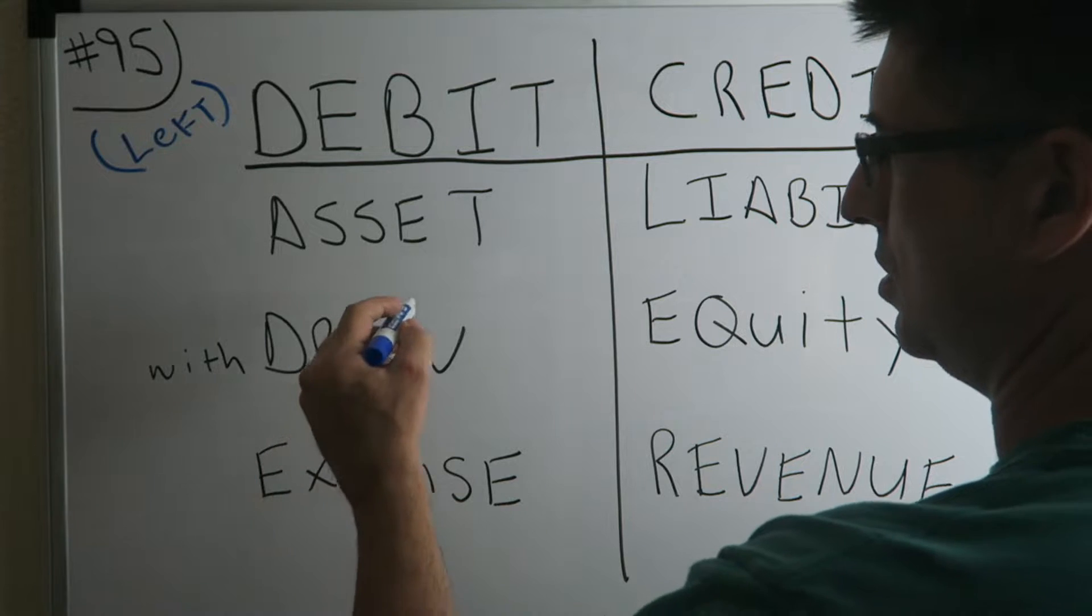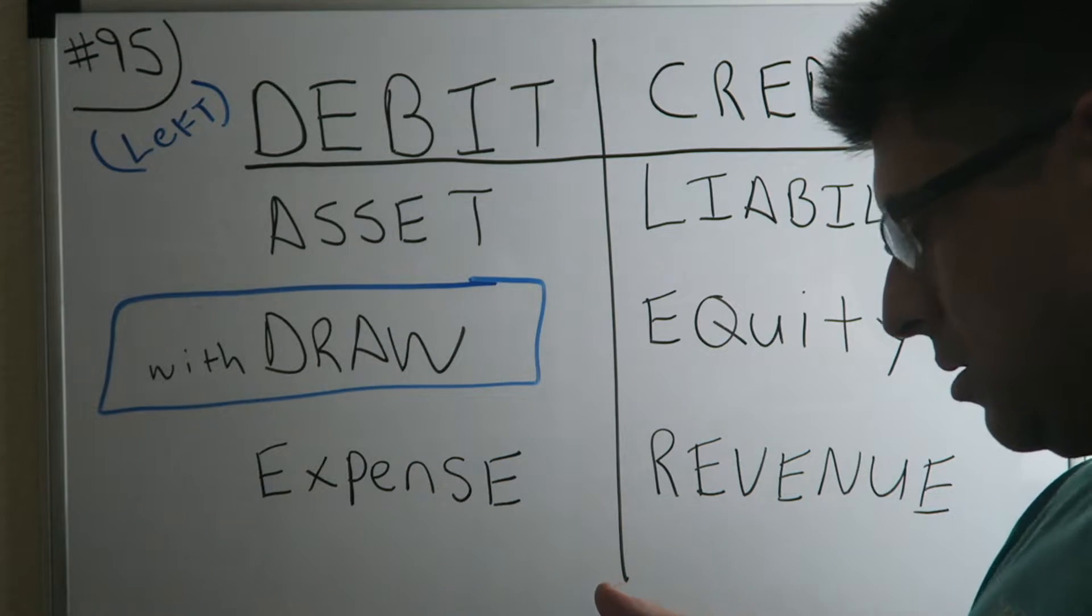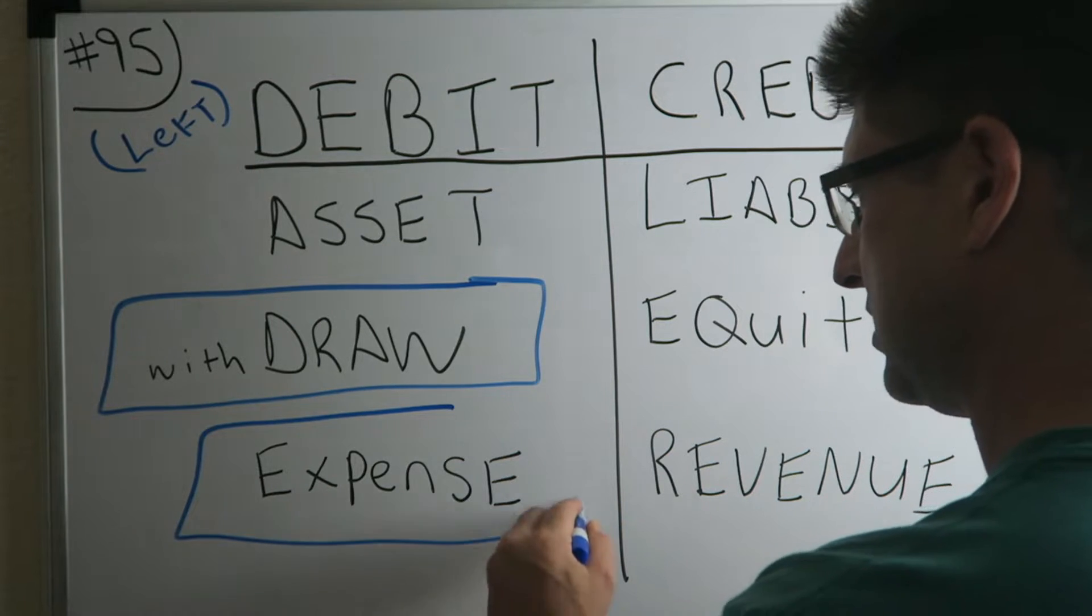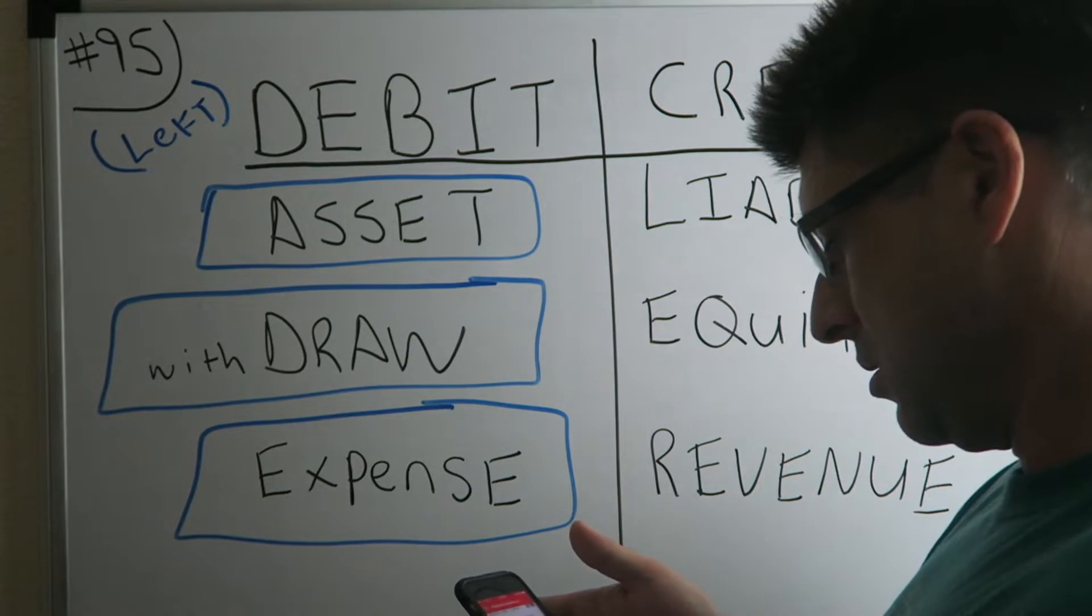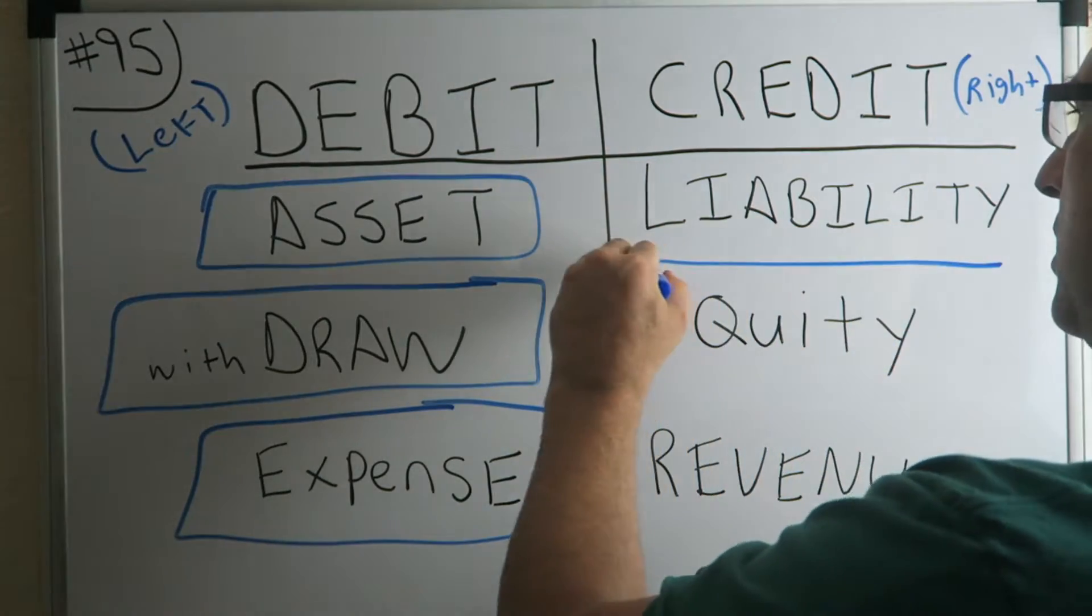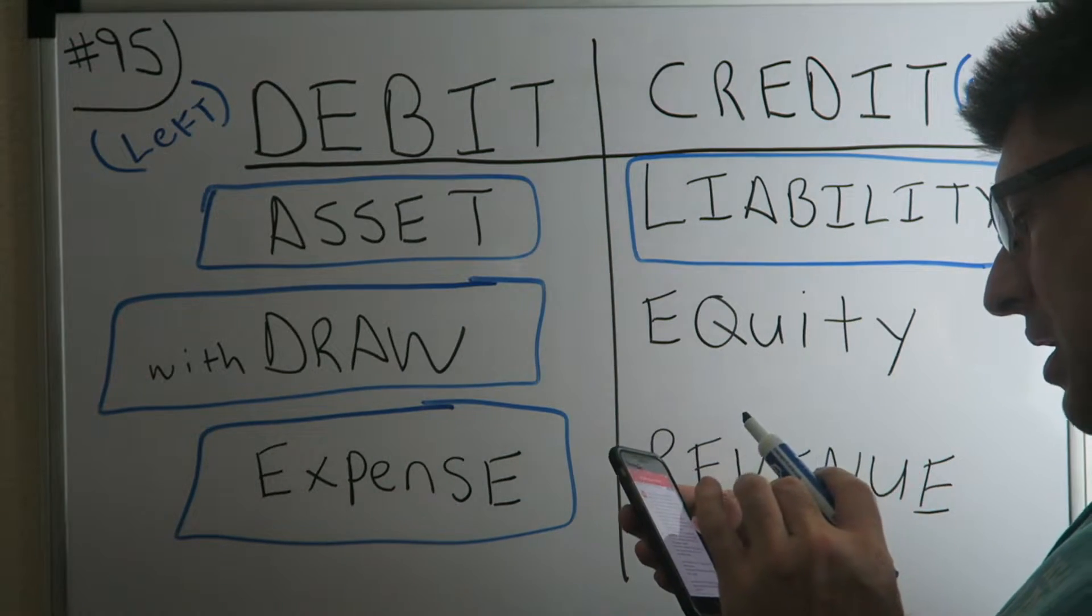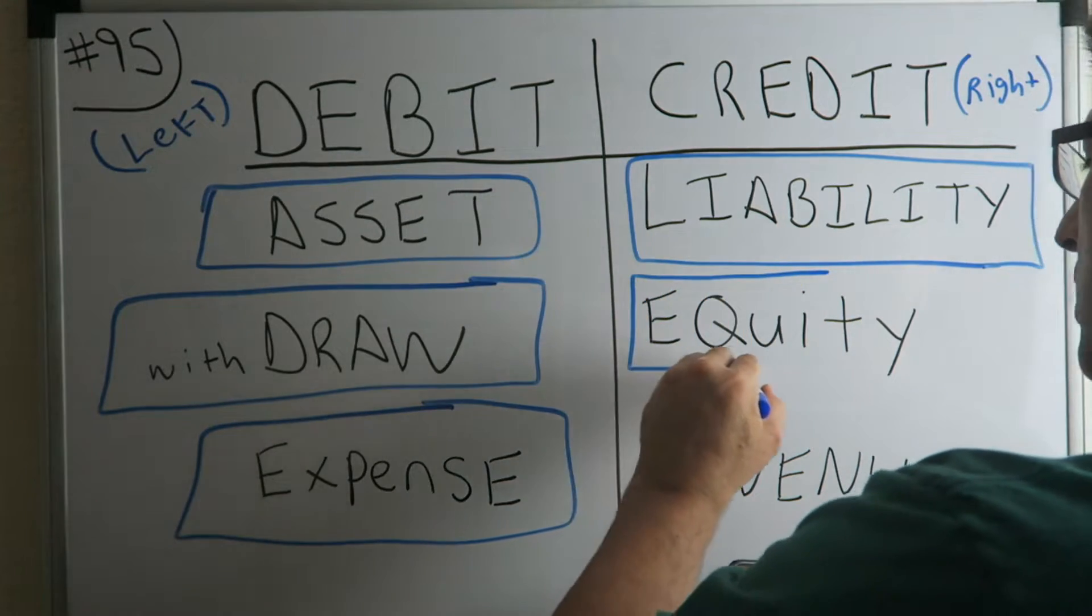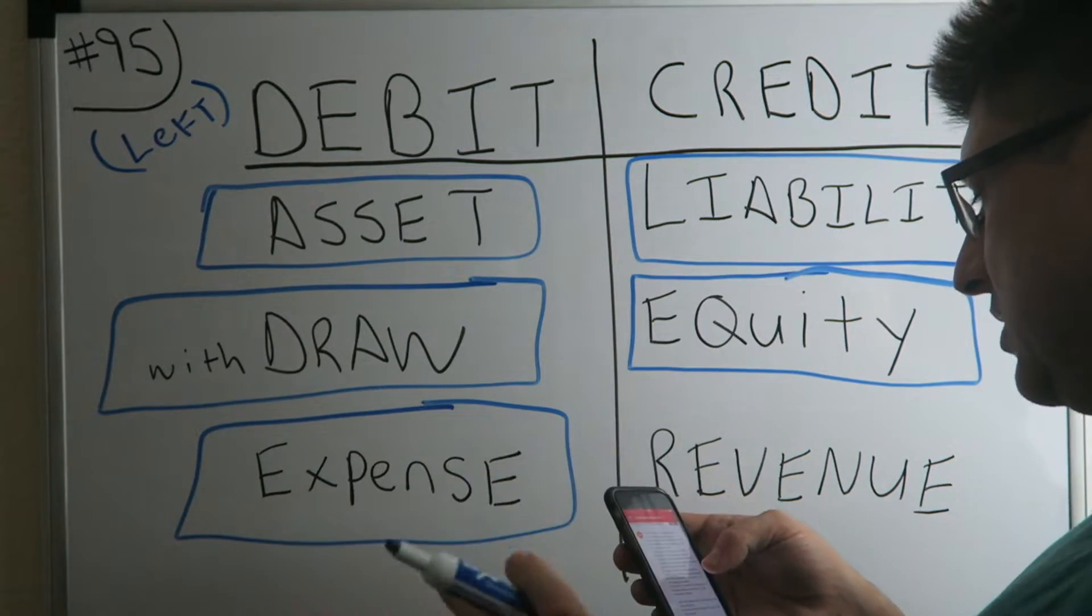He has draws, withdraw, yep there's one. Second one, expenses, yes. Third one, he has asset, yes. We have liability, liabilities, yes there's our fourth one. Then we have equity, equity or owners equity or stocks, stock in the company, yes that's the fifth one. Sixth one, revenue.